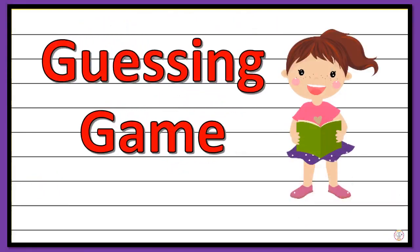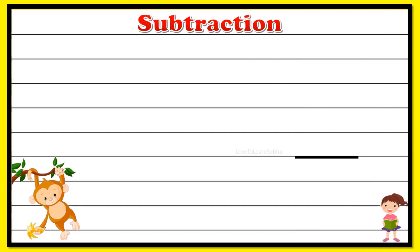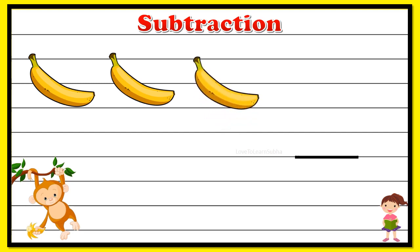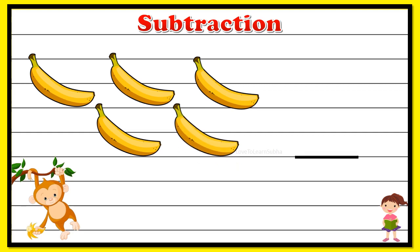Now let's play a guessing game! I'll give you some pictures and you have to find the difference. I'll give you the total number of pictures, and you have to subtract a particular number and find the remaining balance. Here is our first example problem — one, two, three, four, five — totally we have five bananas. Three bananas are taken away by this monkey, so we write it as minus three. Now you have to find the balance bananas.